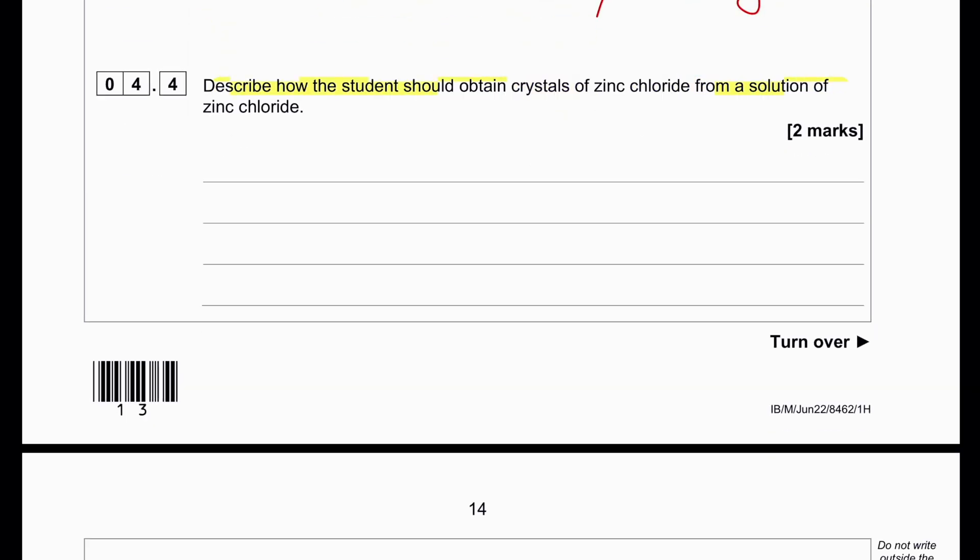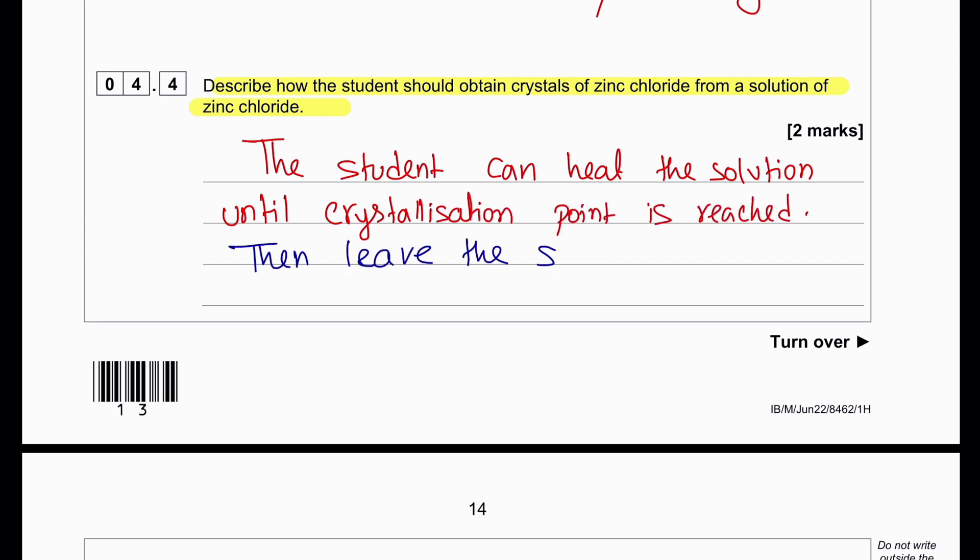Describe how the student could obtain crystals of zinc chloride from a solution of zinc chloride. The student can heat the solution until the crystallization point and then leave the solution to cool and crystallize.